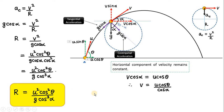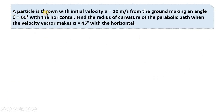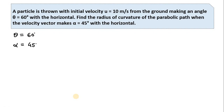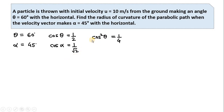Let us look at a numerical problem. A particle is thrown with initial velocity u equal to 10 meters per second from the ground at angle theta equal to 60 degrees with the horizontal. Find the radius of curvature of the parabolic path where the velocity vector makes angle alpha equal to 45 degrees with the horizontal. Three data are given: u, theta, and alpha. We have cos 60 degrees equal to 1/2 and cos 45 degrees equal to 1 over root 2. So cos squared theta equals 1/4, and cos cubed alpha equals 1 over root 2 cubed, which is 1 over 2 root 2.